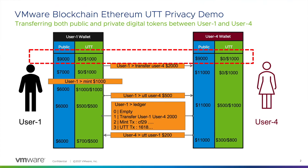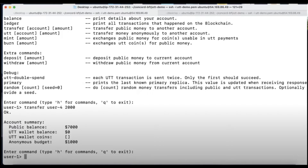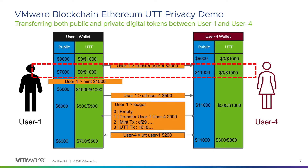Coincidentally, they also have a thousand dollars in privacy budget, which we'll talk about later on. User 1 wants to transfer two thousand dollars to User 4 from his public wallet, and post-transfer you can see that his wallet now has seven thousand dollars and User 4 has an increase of two thousand to eleven thousand dollars in her public wallet.